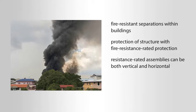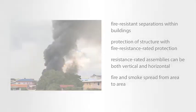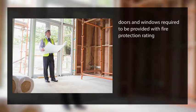Fire resistance rated assemblies can be both vertical and horizontal. Openings in a fire resistant rated assembly can allow fire and smoke to spread from area to area. Therefore, doors and windows located in an assembly are required to be provided with a fire protection rating as well.